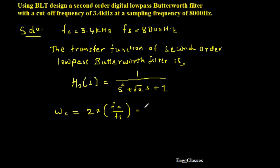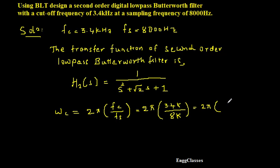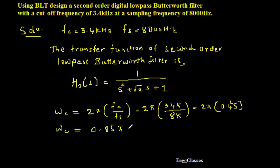Substituting the values: Fc is 3.4 kHz divided by Fs which is 8000 Hz. Calculating that gives 2pi into 0.45, and simplifying leads to the cut-off frequency Omega C equal to 0.85pi radians per second. So this is now the cut-off frequency.